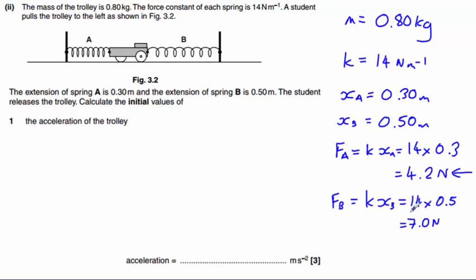So therefore, the net force equals 7.0 minus 4.2, which is going to be 2.8 newtons. And we know that the net force equals mass times acceleration, so we can rearrange now to get acceleration equals force divided by mass.